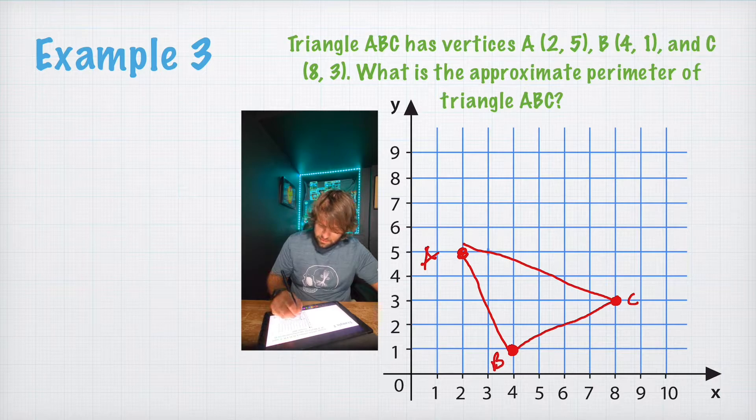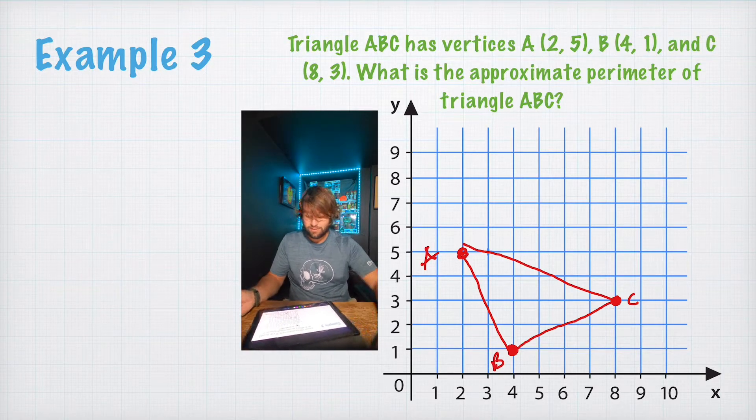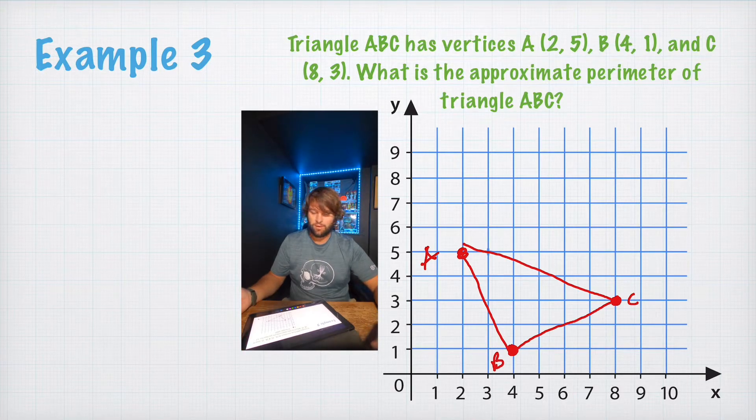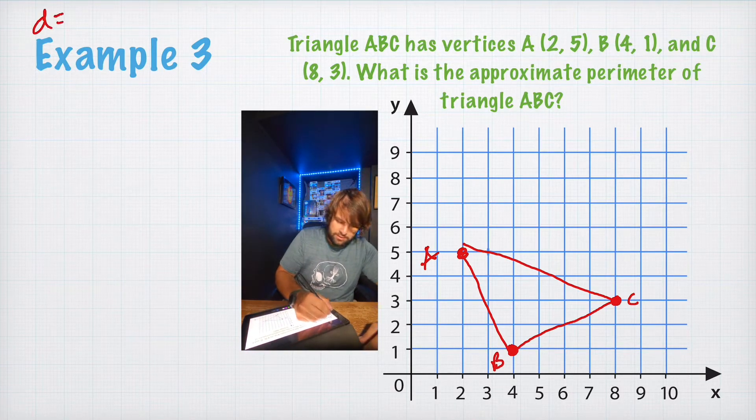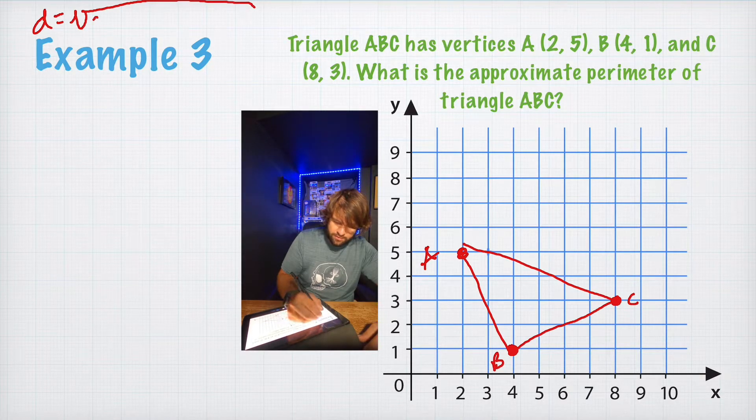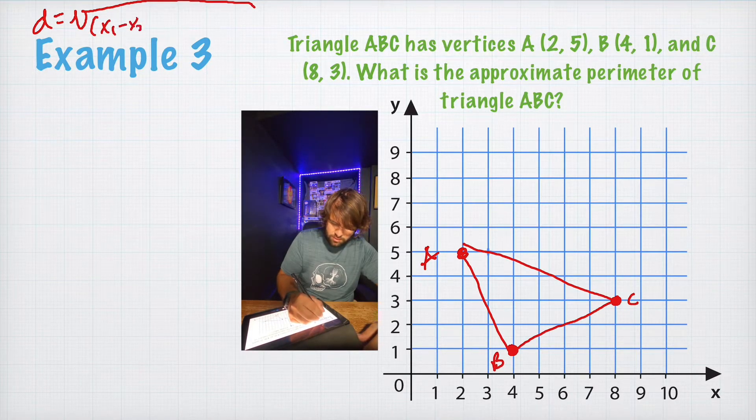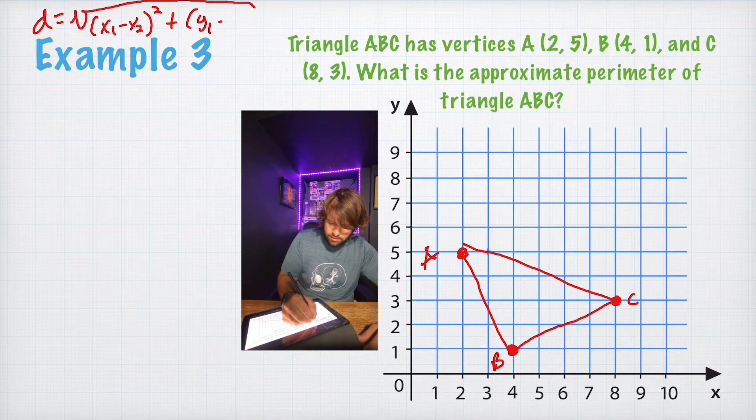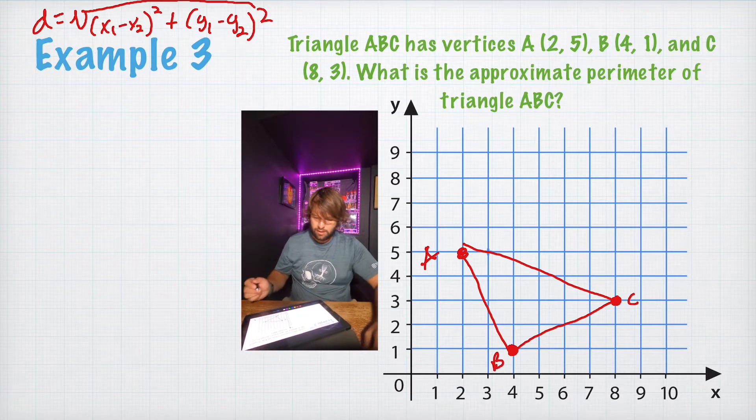Now, to find the perimeter, we have to know the length of every side of this triangle. And to do that, we're going to have to use the distance formula we learned about a few lessons back. Where D equals the square root of x1 minus x2 squared plus y1 minus y2 squared.